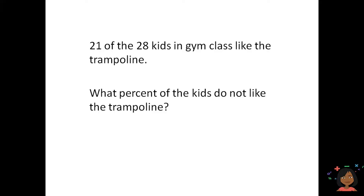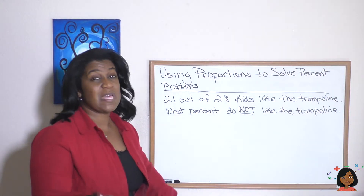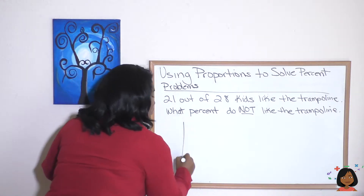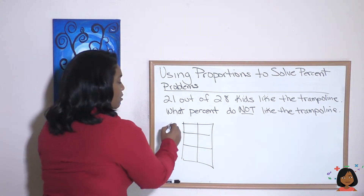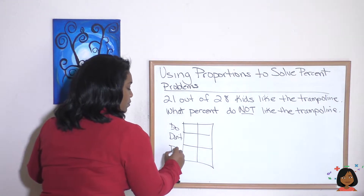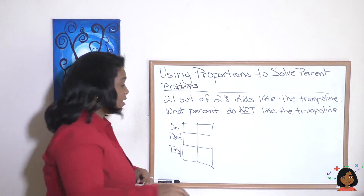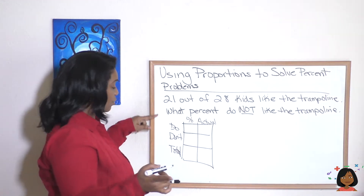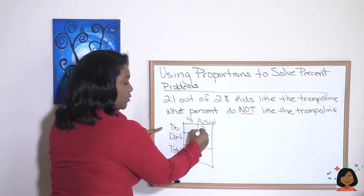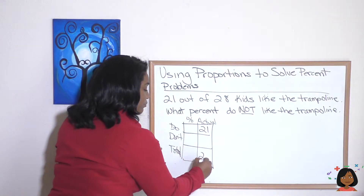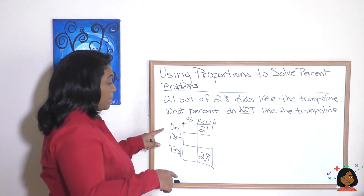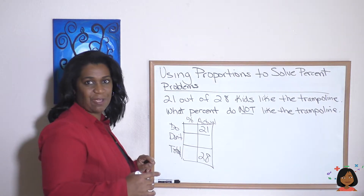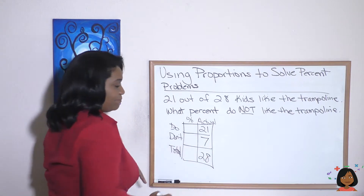Let's go to problem number three. 21 of the 28 kids in gym class like the trampoline. What percent of the kids do not like the trampoline? We set up our ratio box with three rows — do, don't, total — and two columns: percent and actual. They gave us that 21 out of 28 like the trampoline, so 21 goes in the actual do row and 28 in the total actual. We can fill in the don't actual: 28 minus 21 is 7.